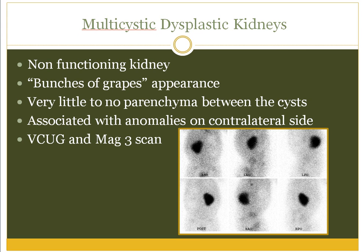First, we discuss multi-cystic dysplastic kidneys, abbreviated as MCDK. There is essentially no functioning kidney parenchyma. On ultrasound it appears as a bunch of grapes, and can be detected antenatally. On a MAG3 scan, which is a functional scan, you will see only the normal kidney — the MCDK kidney will not be lighting up. As demonstrated in this MAG3 scan, only the normal kidney is seen and the MCDK kidney is not visible.